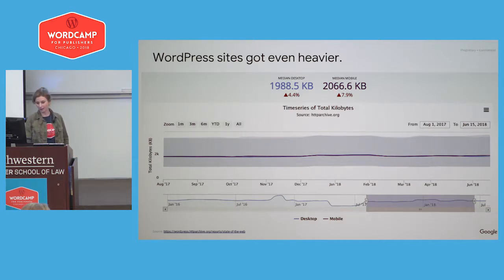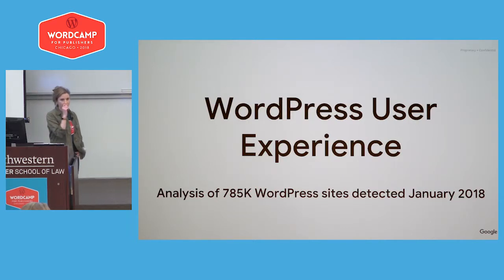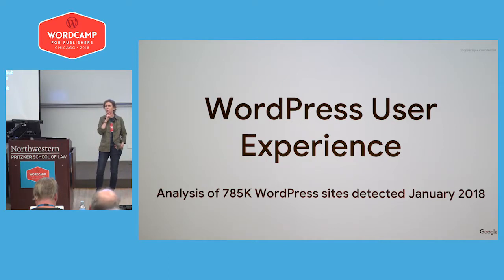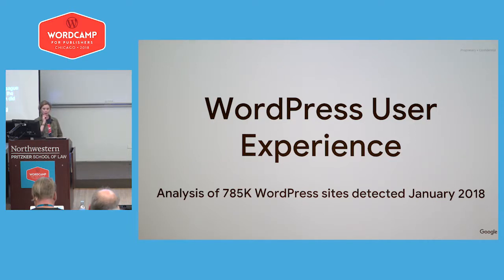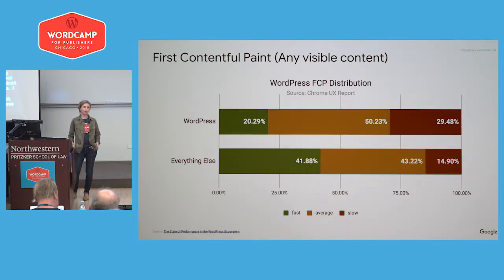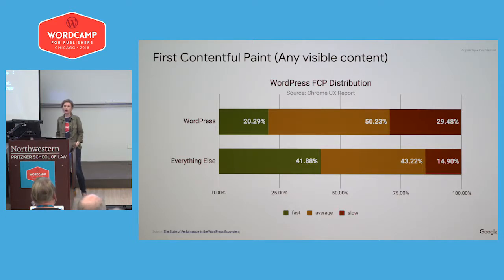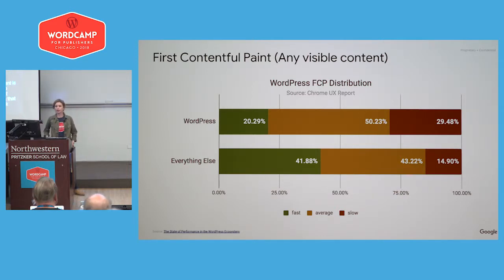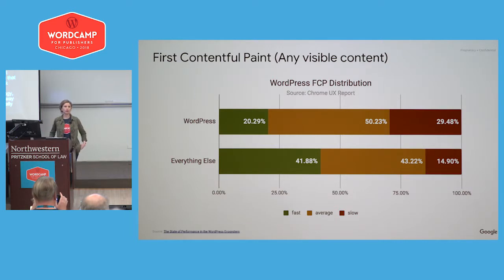This is more WordPress data. A colleague of mine, Rick Viscomi, on the developer relations team, did this analysis looking at the Chrome User Experience Report and a sample of about 800,000 WordPress sites. We're looking at three KPIs, the first being First Contentful Paint — the first point at which consumable content is available. The key takeaway is that users are having a fast experience with WordPress sites about half as often as they're having a fast experience on other sites.